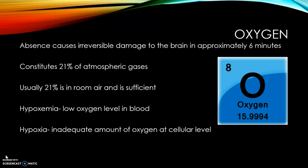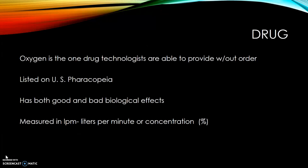The absence of oxygen to the brain for about six minutes can cause irreversible damage. Oxygen constitutes about 21% of the atmospheric gas, and usually 21% in room air is sufficient for most patients. Hypoxemia is low oxygen level in the blood, and hypoxia is an inadequate amount of oxygen at the cellular level. Oxygen is the one drug technologists are able to provide without a doctor's order. It has good and bad biological effects and is measured in liters per minute or concentration.